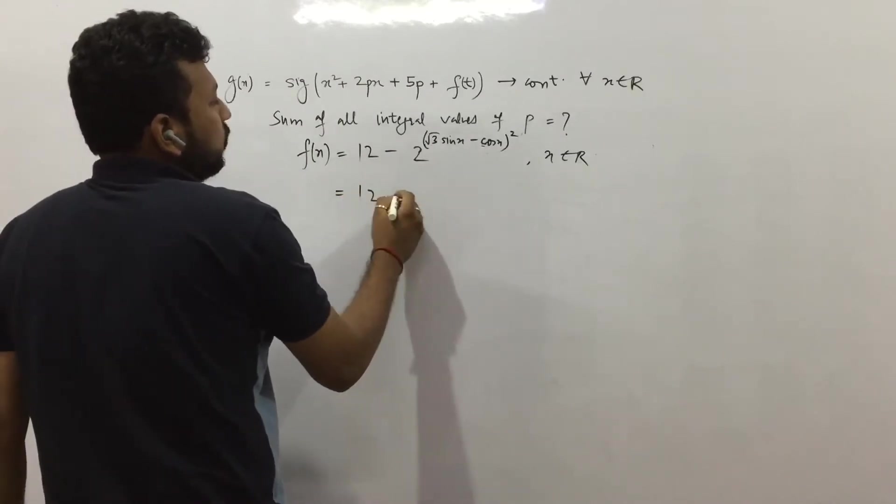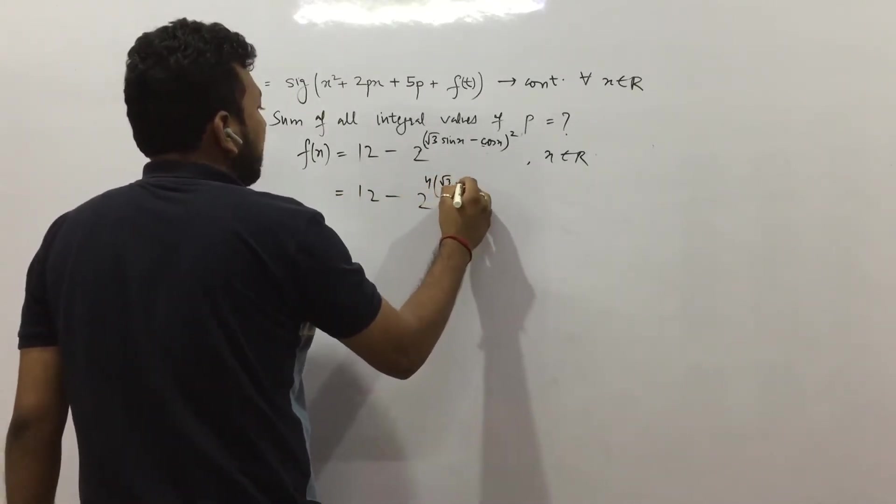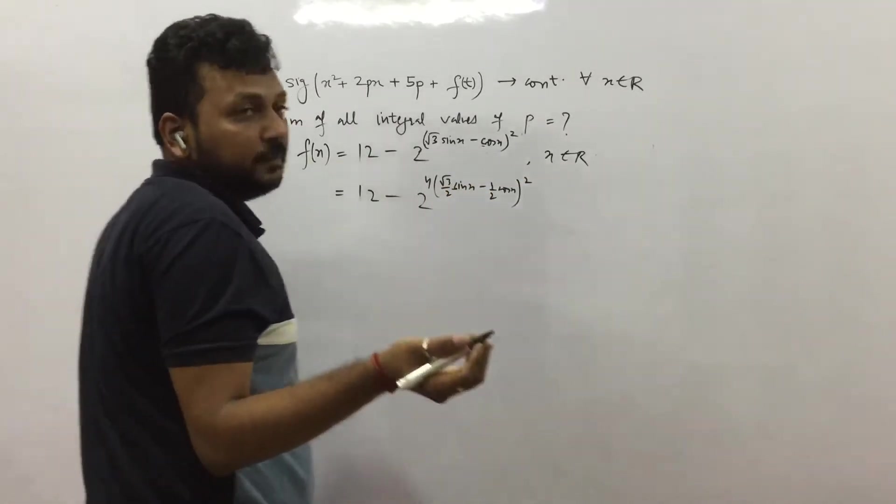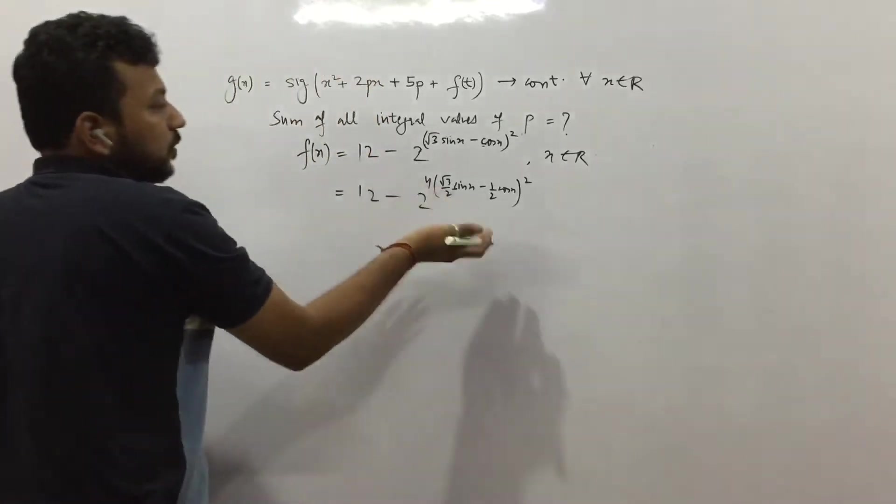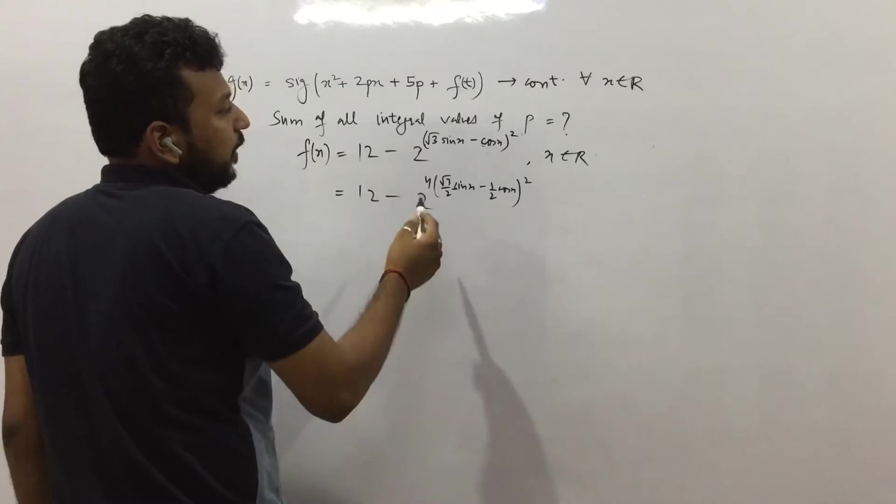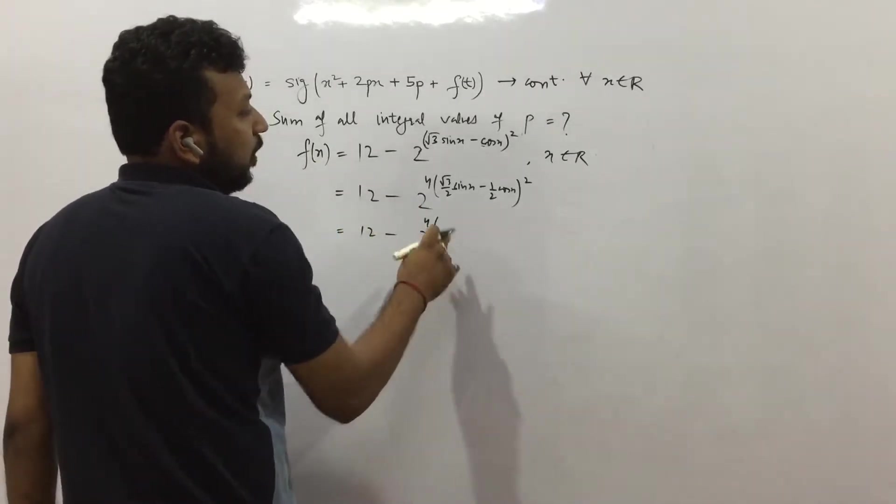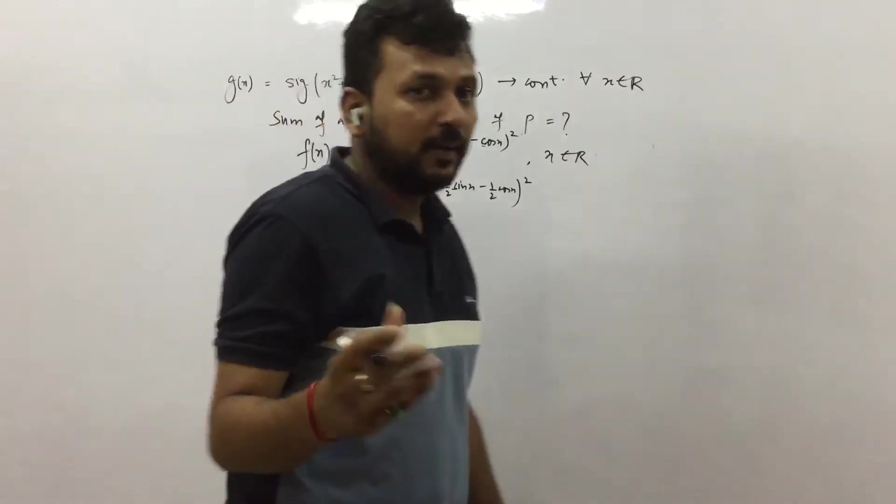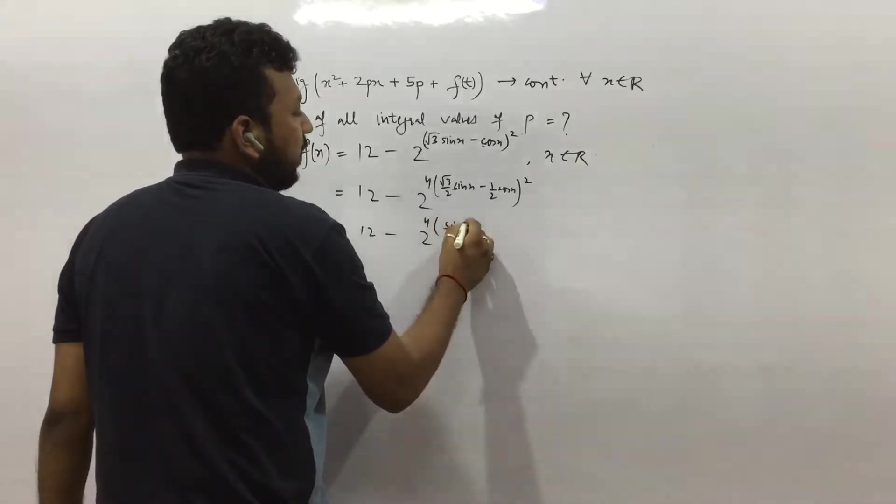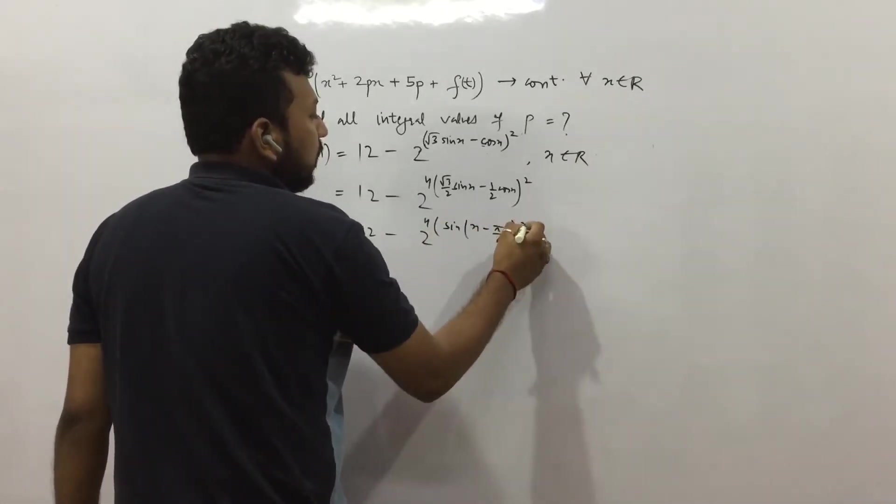So see I can write it as 12 - 2 × 4(√3/2 sin x - 1/2 cos x)p³. We can write it like this, right, because it will get cancelled. Now it will become sin·cos - cos·sin. So this √3/2 can be written as cos 30 and this is sin 30. It will become sin·cos - cos and we have it is sin of (x - π/6)².